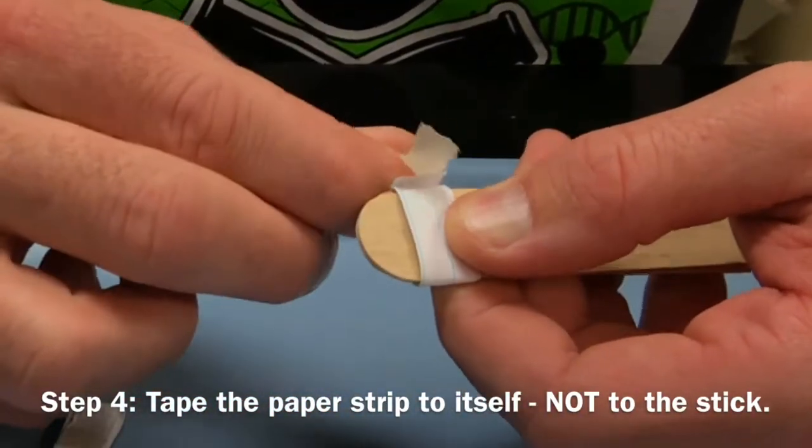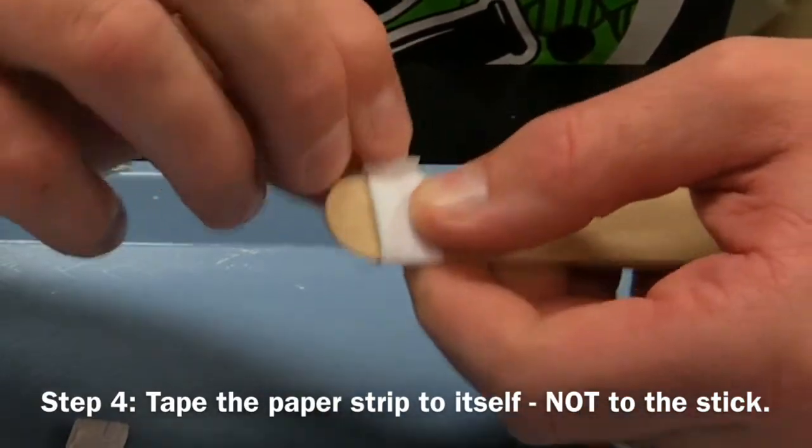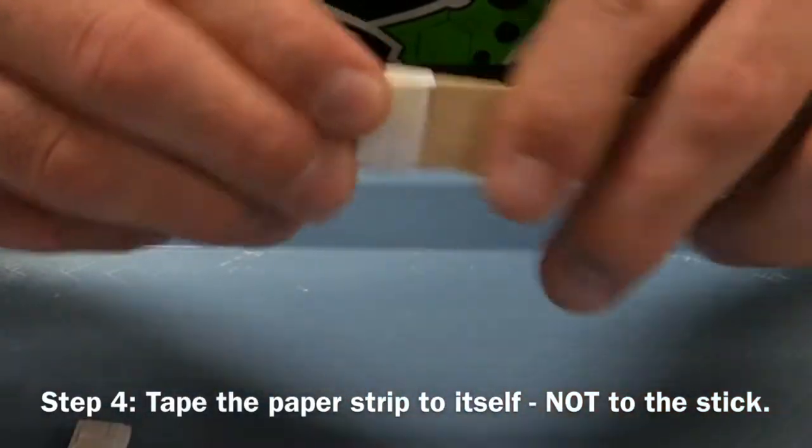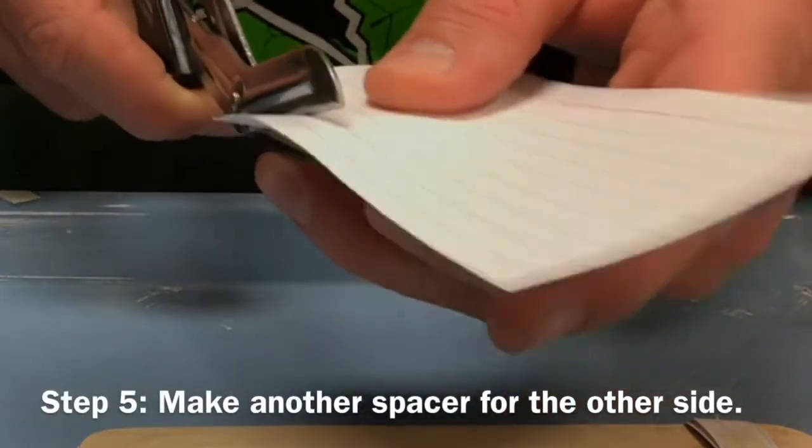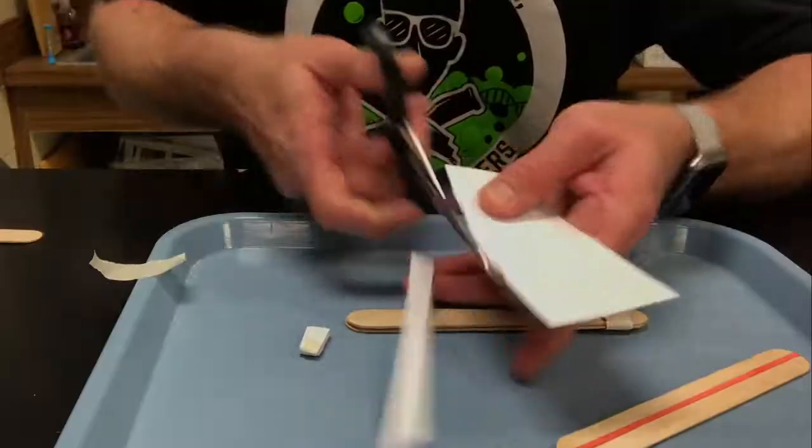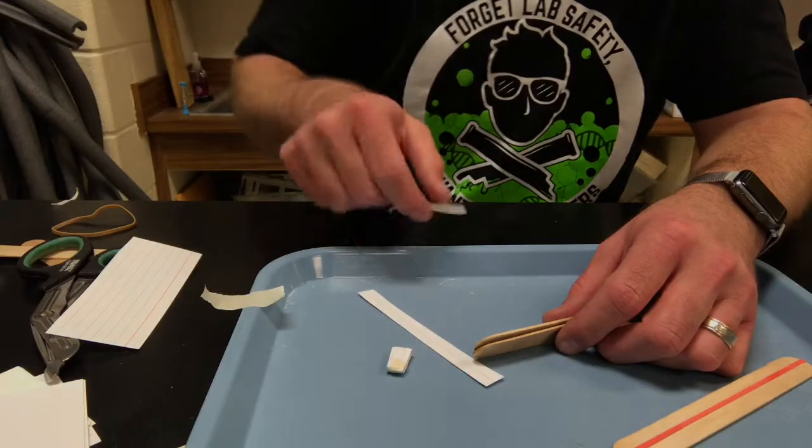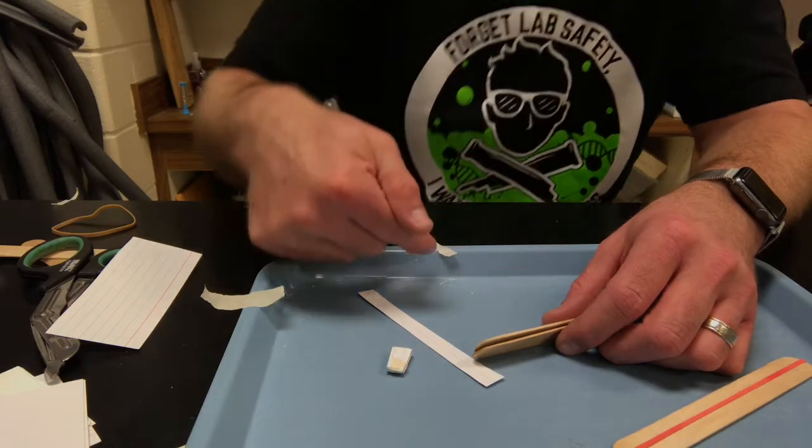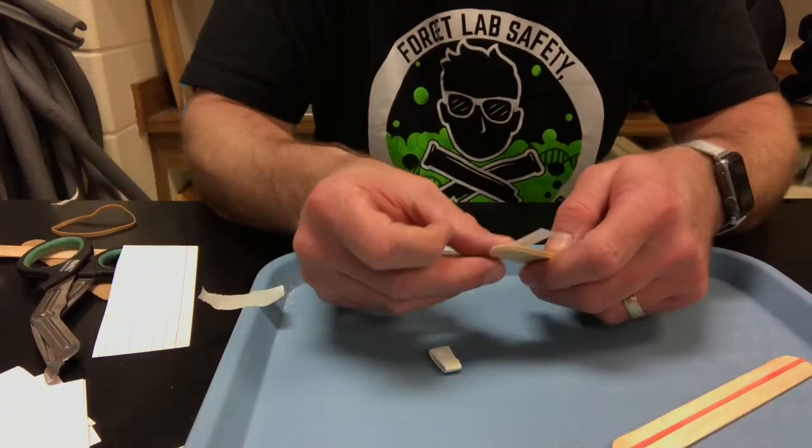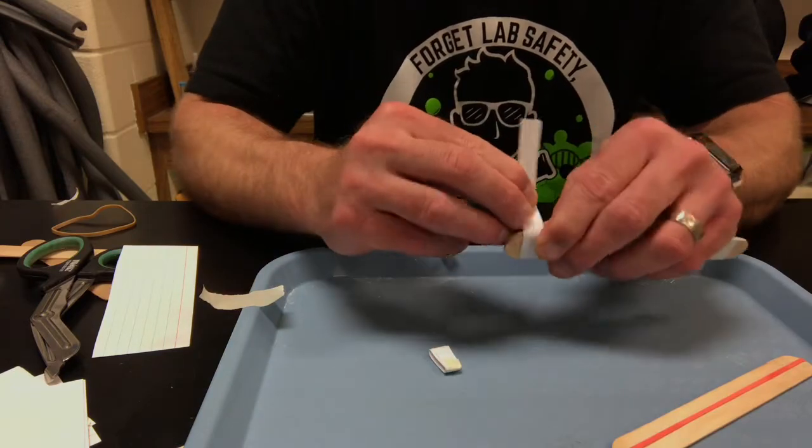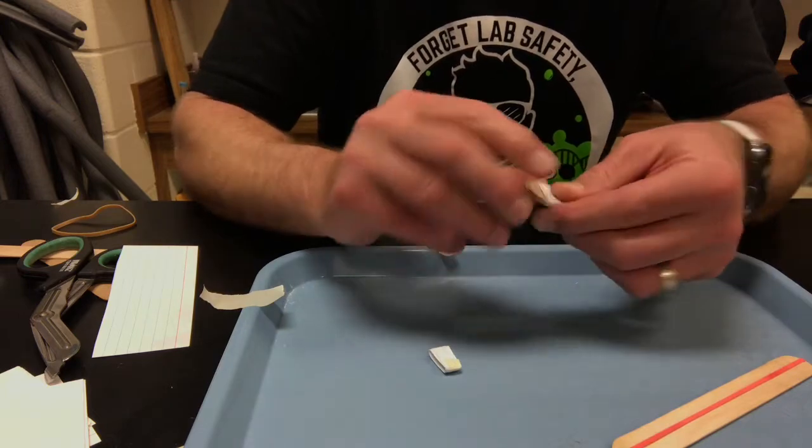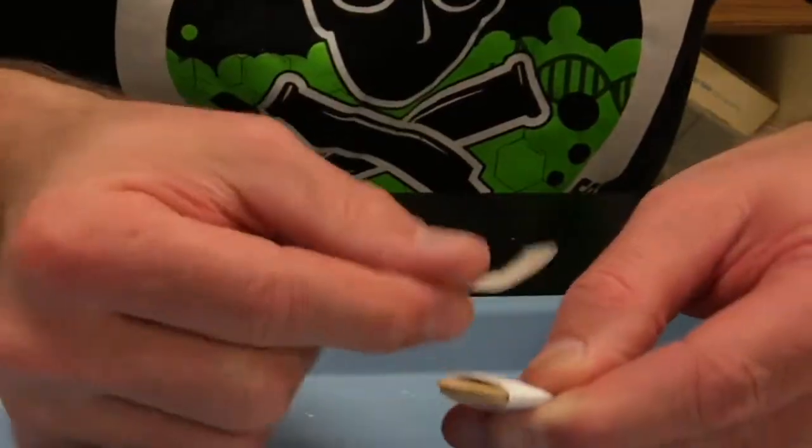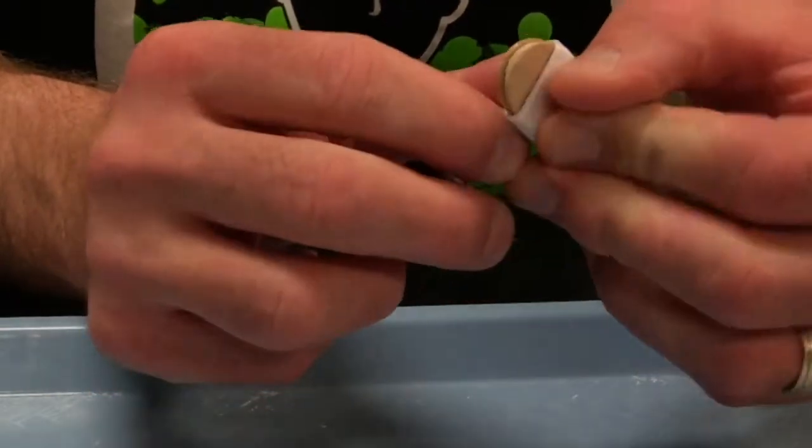And then the same thing on the other side. Again, I'm gonna choose these two skinny ones here, got my tape ready, skinnier than your strip. I'm just gonna set that on there, wrap it around, and then my skinny tape. I'm just taping it, not taping to the popsicle stick.